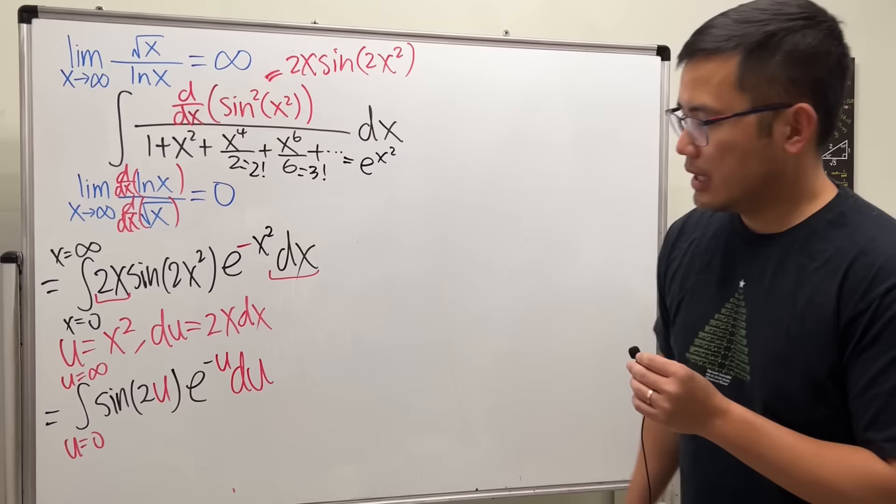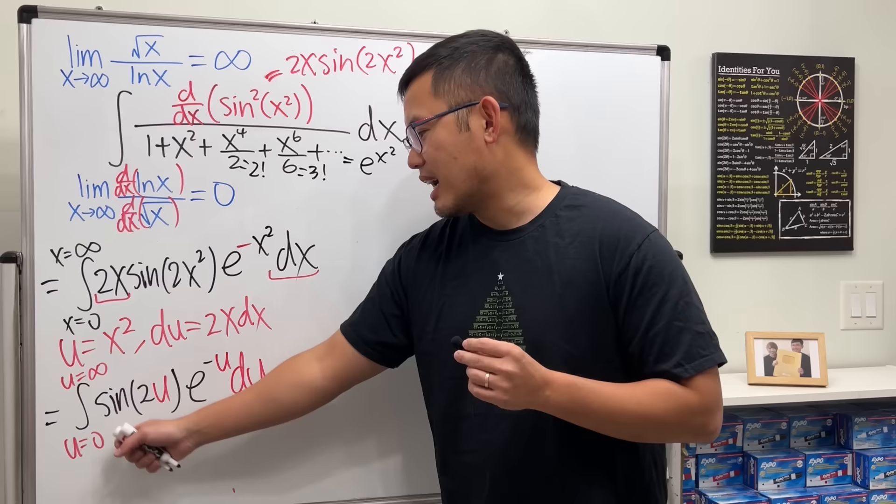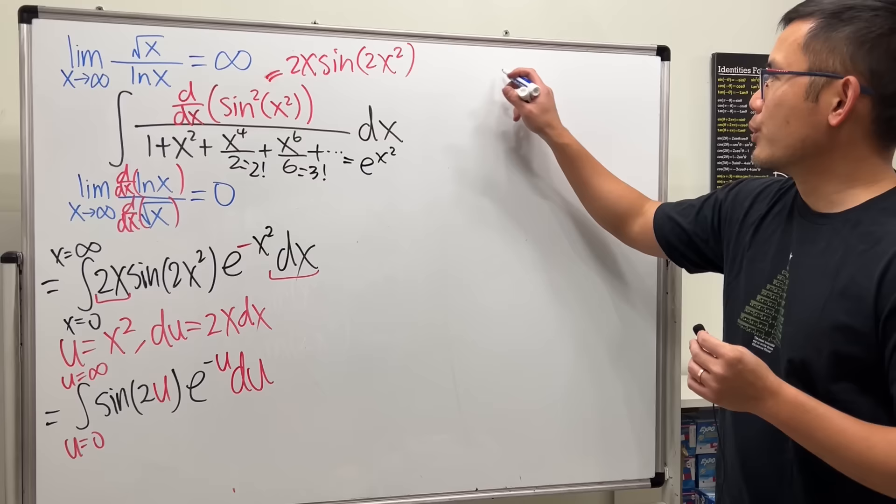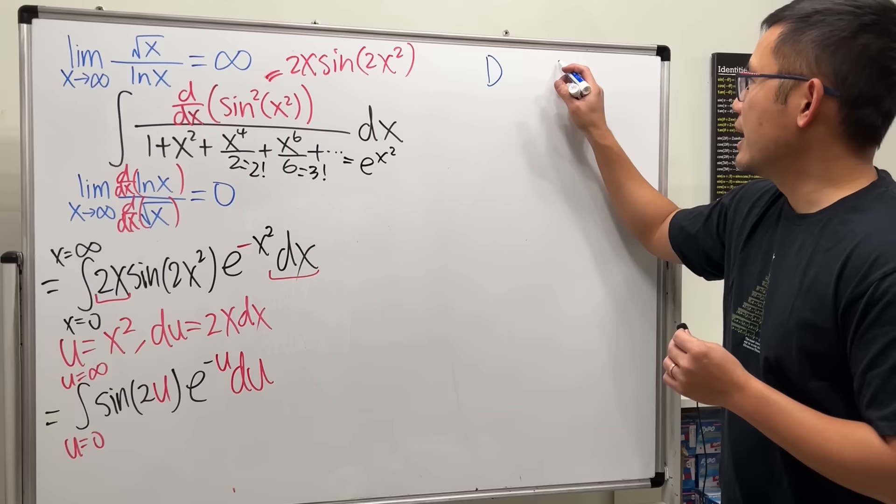This is a standard calculus 2 integral — sine times an exponential. We use integration by parts, and this will be the repeating case. Let's set up the DI method for integration by parts.